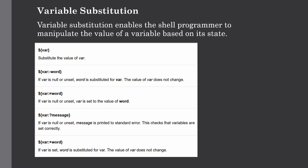The other type of substitution is variable substitution, which enables us to manipulate the value of a variable based on its state. In the table of possible substitutions: first, it substitutes the value of var directly. Second, if var is null or unset, the given word is substituted for var but the value of var remains unchanged. Third, if var is null or unset, var is set to the value of word. Fourth, if var is null or unset, the message is printed to standard error to check that variables are set correctly. Fifth, if the variable is set, the word is substituted for var and the value of var does not change.